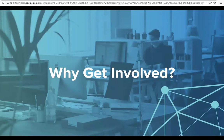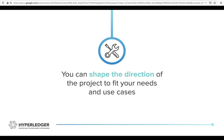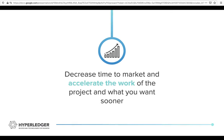First, I want to speak about why you might want to get involved in an open source project. One reason is you can shape the direction of the project to fit your needs and use cases. As open source, everything is freely available to use, but you can also modify, change, and evolve the project to fit your needs. Working in a global collaborative environment, you can decrease time to market and accelerate the work, getting what you want sooner compared to trying to do all the work on your own.